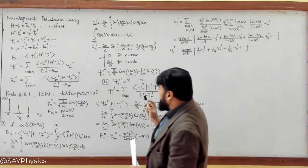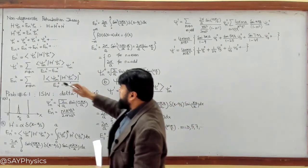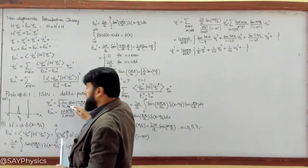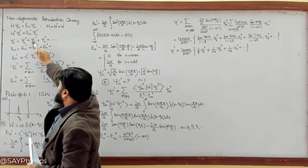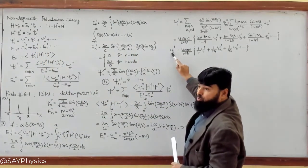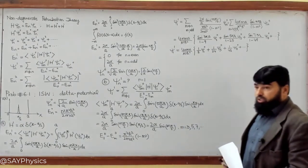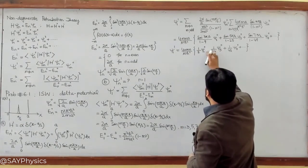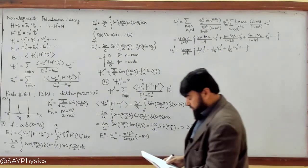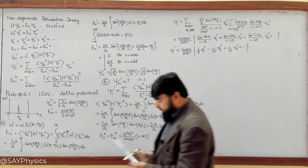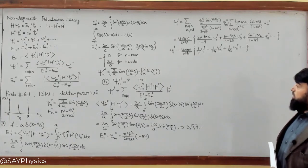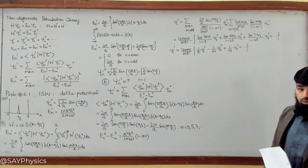We can then write the total perturbed wave function as ψ_n = ψ₁⁰ + ψ₁¹, combining the unperturbed wave function with the first order correction just derived. The alternating signs follow as plus, minus, plus, minus, and so on. This completes the first order correction to the wave function.